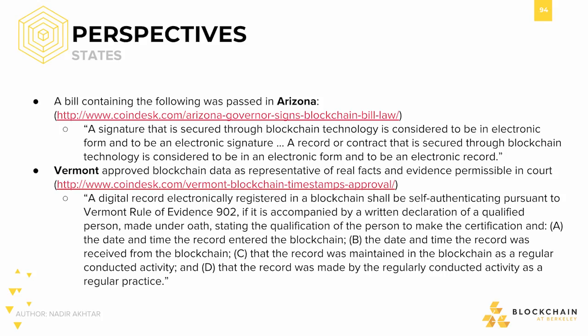Now that we've given some examples of regulations about cryptocurrencies, let's dive into some perspectives offered by states within the U.S. Two states which have created pro-blockchain legislation include Arizona and Vermont. In Arizona, a bill was signed which allows blockchain digital signatures to be considered legal signatures, implying that smart contracts are enforceable through the power of the government. In Vermont, information on the blockchain is considered representative of real facts and evidence permissible in court, as long as it satisfies a few conditions, including the date and time the information entered the blockchain, and whether the record was made by a regularly conducted activity as a regular practice — meaning a neutral body is executing the record without bias.